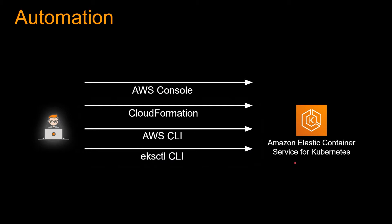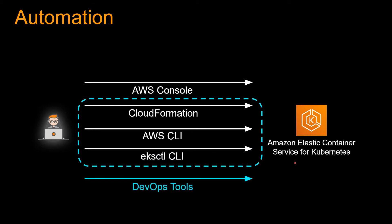There's one more important way: DevOps tools. In an actual production environment you won't have access to a terminal or even the console, so you need to automate the whole process. Using DevOps tools like Jenkins or CodePipeline you can automate CloudFormation, AWS CLI, or eksctl to spin up EKS. For testing and trying things out, eksctl is the easiest way.